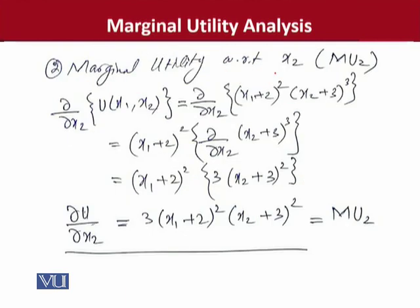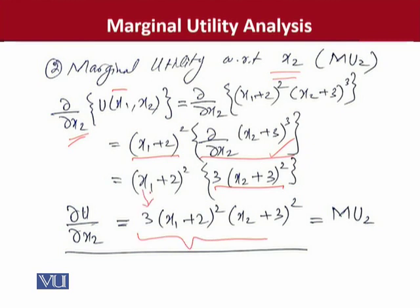Intuitively, you can guess that we can now calculate the derivative with respect to x2, using the same procedure as in the last slide. But here we treat x1 as a constant. This is why we write out the x1 expression and calculate the derivative of the x2 expression — giving a result starting with the coefficient, then the first variable, then the expression of the second variable.